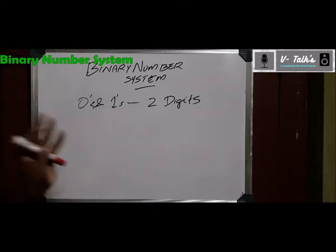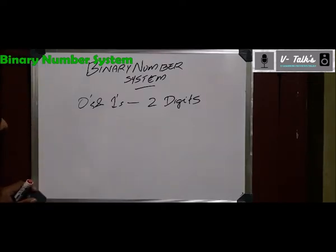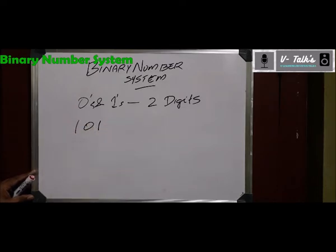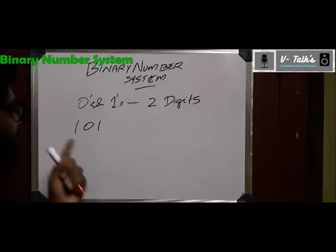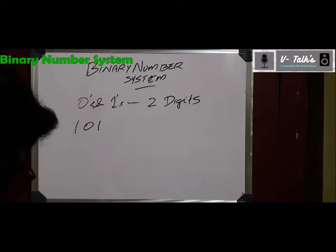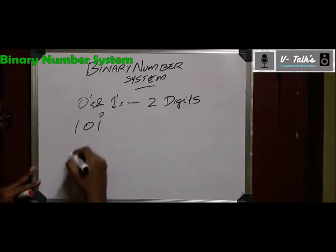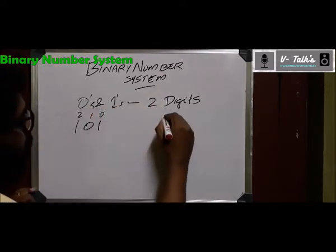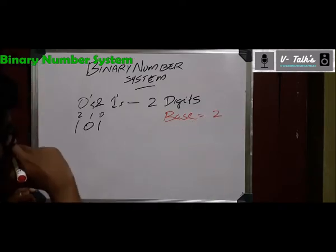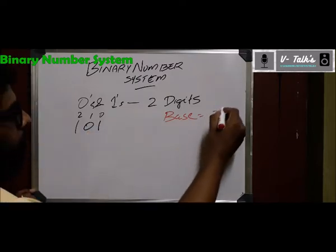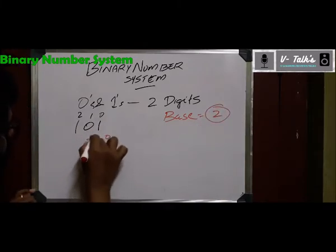What binary number system means is that it contains only 0s and 1s. For example, in computer memory a number is represented as 101. For a decimal number this would be 101, but in binary it is not the same value. The positions are: position 0, position 1, and position 2 from right to left. Since the base is 2, we use 2 raised to 0, 2 raised to 1, and 2 raised to 2 — just as we did with powers of 10 for the decimal system.